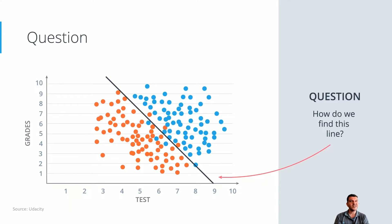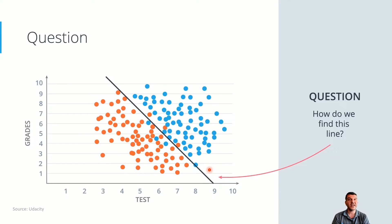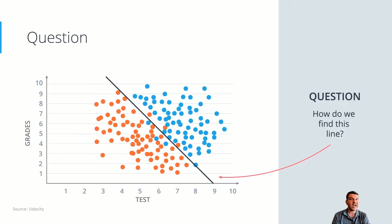Now let's start from where we left on the second video. As a fast recap, on the second video we approached mathematically a model defined by a line that separates two sets of data labeled as accepted or rejected for students' entrance to a university based on scores on a test and grades. However, even though we approached this mathematically, we took this line for granted. Now, how can we find this line?